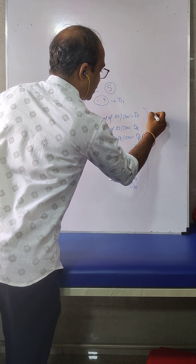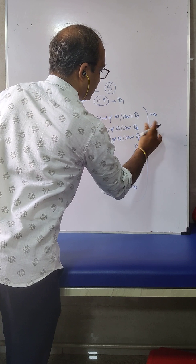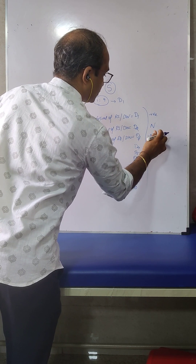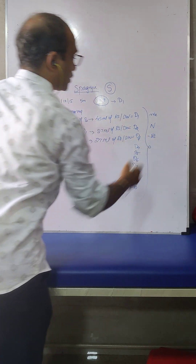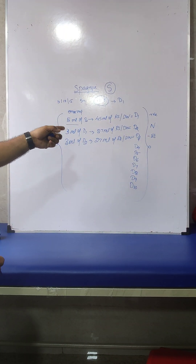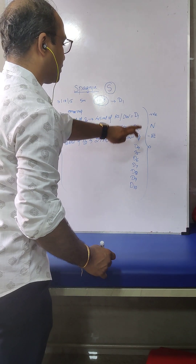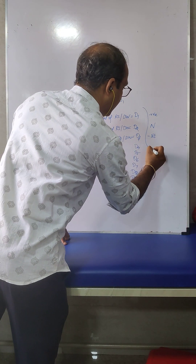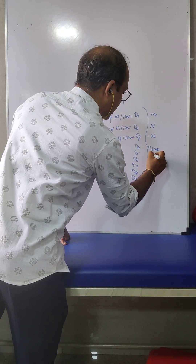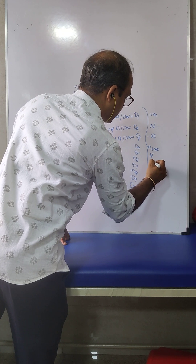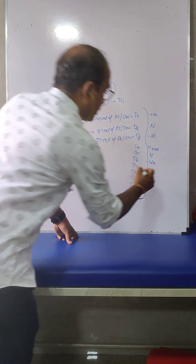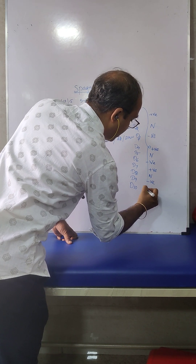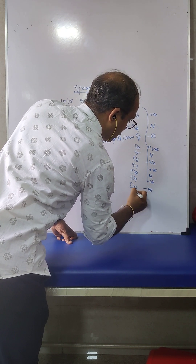D1 is positive. D2 is neutral. D3 is negative dose. D4 is positive. D5 is neutral. D6 is negative dose. D7 is positive. D8 is neutral. D9 is negative dose. D10 is more negative dose.